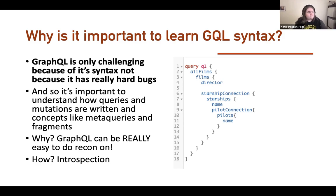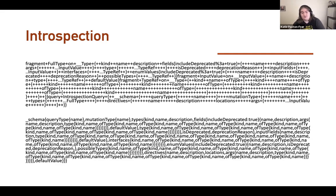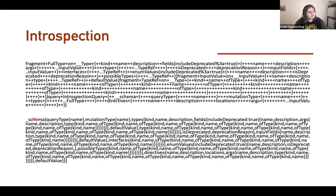Here's an introspection query. Introspection is a feature of GraphQL. Because you can have fragments and meta queries, GraphQL can tell us about its queries — it makes recon a breeze, but we need to interpret the results. What we do is run this query and it returns things like the schema — schema, query name, mutation type, types, kind, name, description, fields, and so on.